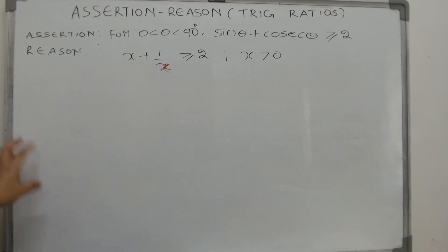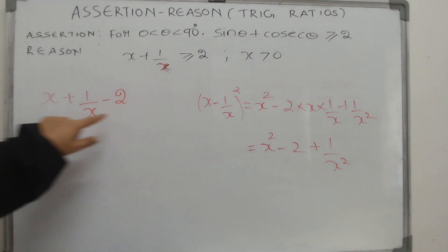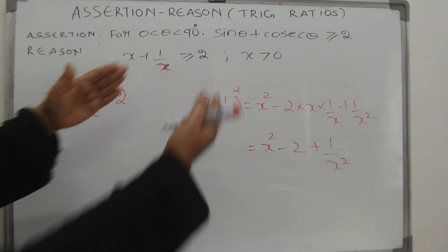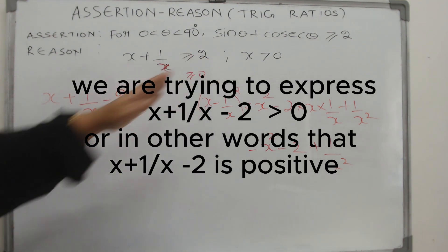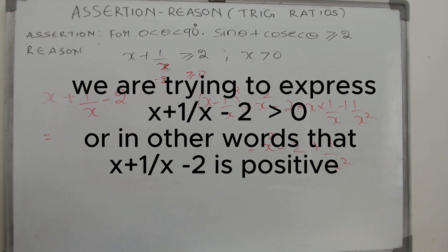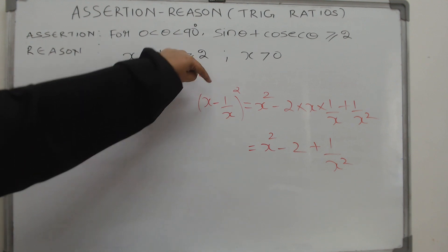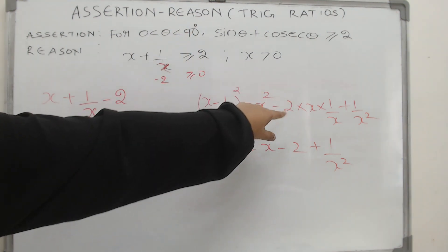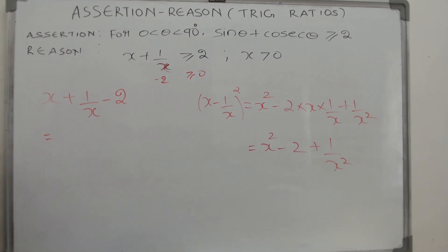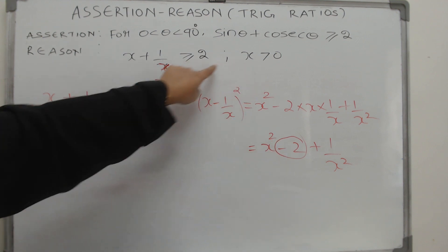But saying something is common sense is the laziest excuse when you are writing an exam — you need mathematical arguments. So instead, take the two to the other side: we need to prove that x plus one by x minus two is greater than or equal to zero. When we studied algebra, we saw that a number and its reciprocal with a two in the middle matches a well-known identity.